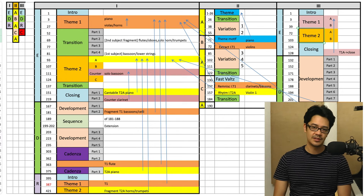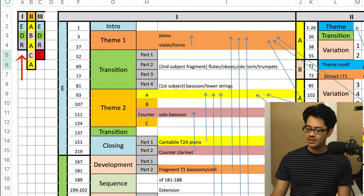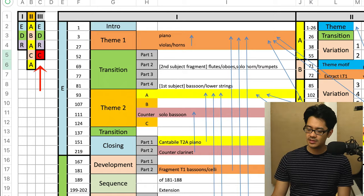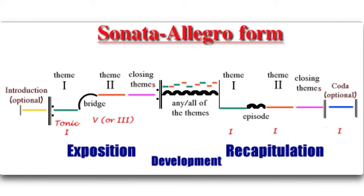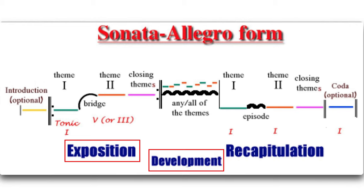On the left we have E, D, and R. In the third movement we also have E, D, R followed by a C. The first movement follows what is called Sonata Allegro form — a classical form used by Mozart, Beethoven, and Haydn, all the way up through Rachmaninoff and still used today. E stands for exposition, D is development, and R is recapitulation.